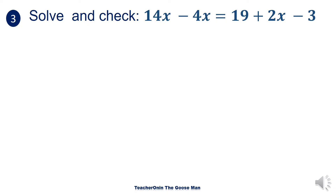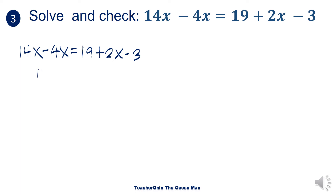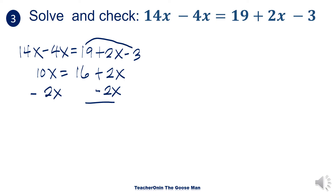Let's move on to the next example. We have 14x minus 4x is equal to 19 plus 2x minus 3. We'll combine similar terms first. So 14x minus 4x gives us 10x, and on the right side, 19 minus 3 gives us 16 plus 2x. Then I subtract both sides by 2x, which results in 16 is equal to 8x.